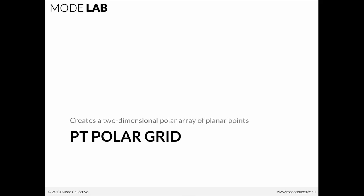That polar grid is creating a two-dimensional polar array of planar points. So if you wanted to do something where you're populating a grid with elements in a two-dimensional array where everything is planar, you can use either of those to your advantage very easily.